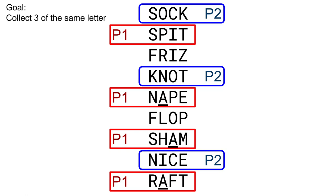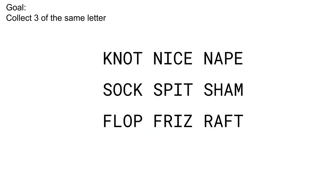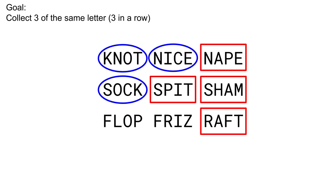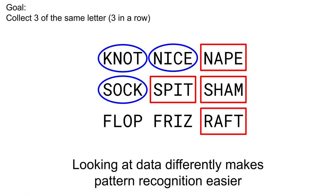When I saw this game for the first time, it was not clear to me how to easily find a winning strategy. The winning strategy is more clear when we rearrange the nine words into a 3x3 grid — then the game becomes the same as tic-tac-toe, or knots and crosses. Collecting three of the same letter is the same as getting three values in a straight line. By looking at the same data in a different way, we were able to leverage our experience with a different game, and the patterns became much easier to spot.